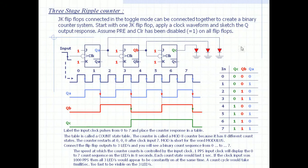will display zero to seven count sequence on the LEDs in eight seconds, so each count state would last for one second. If the clock input was 1000 PPS, then all three LEDs would appear to be constantly on at the same time. The count cycle would take eight milliseconds, too fast to be visible on the three LEDs. Thank you so much. I hope you understood this three-stage ripple counter.